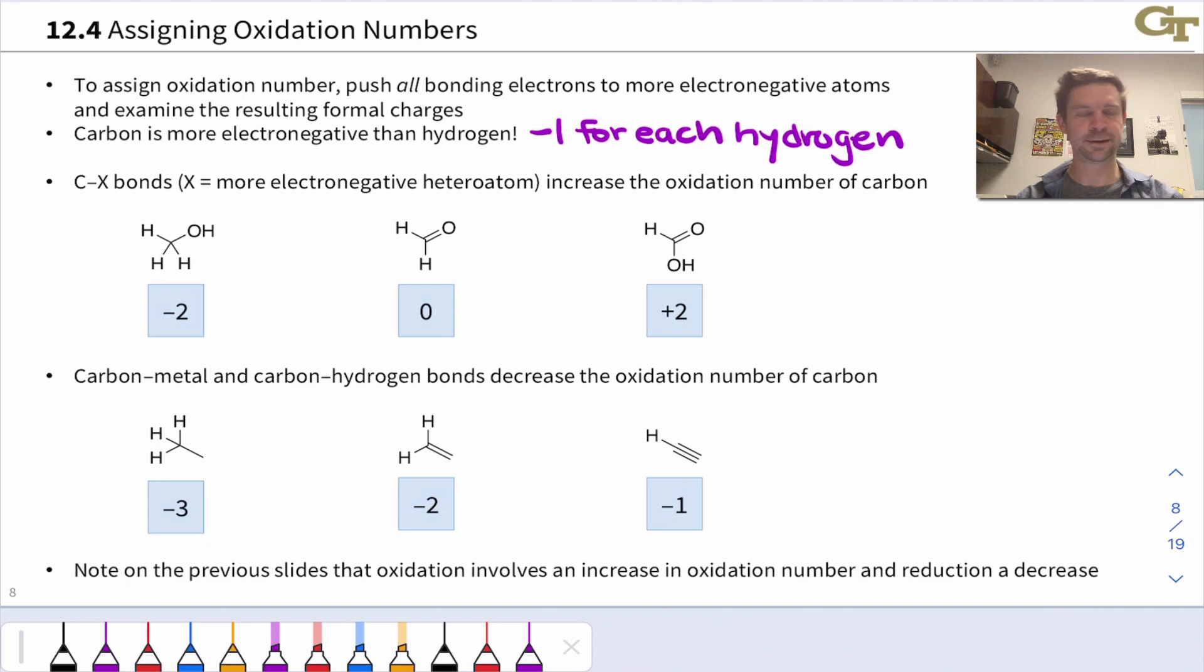Some texts and some instructors don't do this. I actually didn't in the past, but I've had a change of heart for this series of videos. We're going to count negative one for each hydrogen in assigning oxidation numbers, and this is how it's done in the Klein text in section 12.4 of the third edition. CX bonds increase the oxidation number of carbon from zero, which it is in elemental carbon, in something like diamond or graphite.